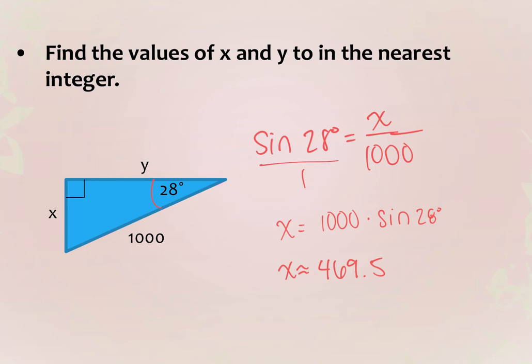How do you know to use sine? Sine is SOH — opposite over hypotenuse. For Y, in relation to 28 degrees, Y is adjacent. Adjacent over hypotenuse involves cosine. Why can't we use tangent to start? Because we don't have either leg — we're only given the hypotenuse. Since we're given the hypotenuse, we have to use sine or cosine to start.